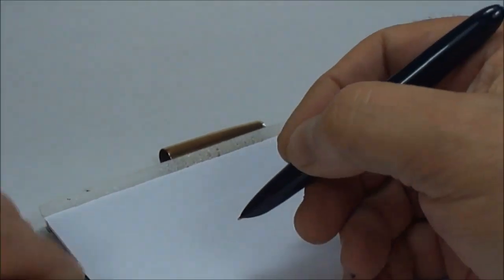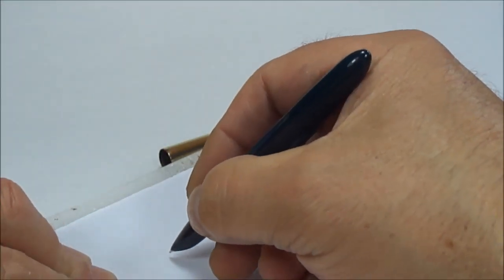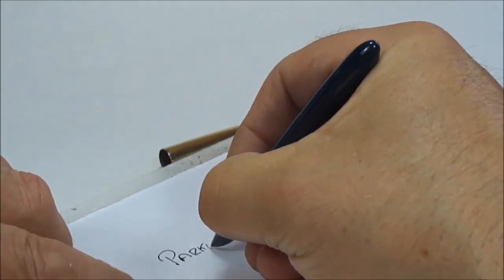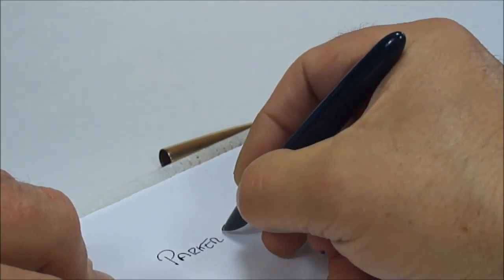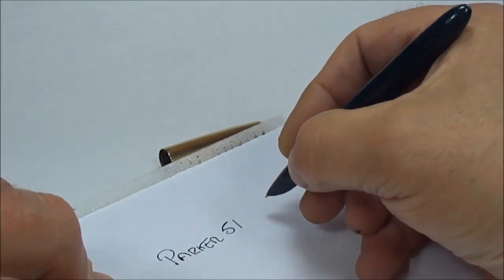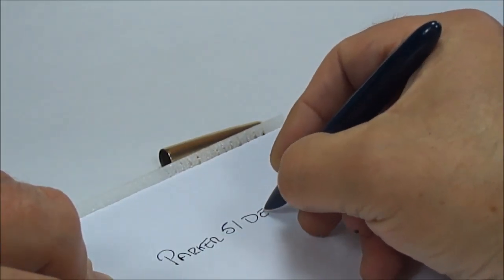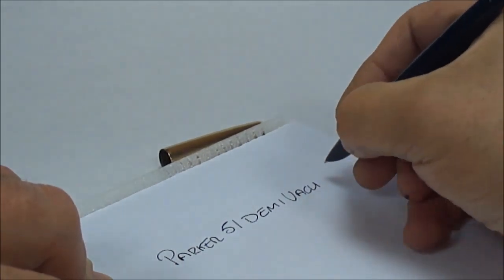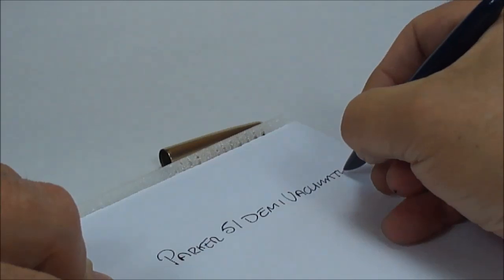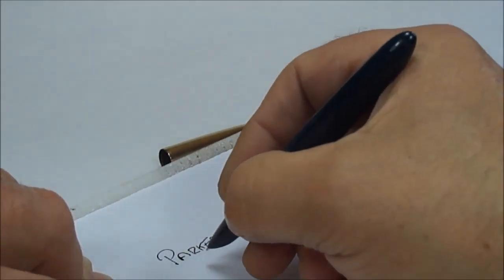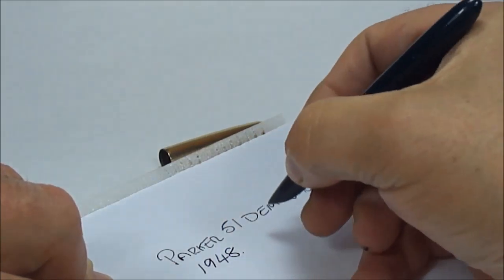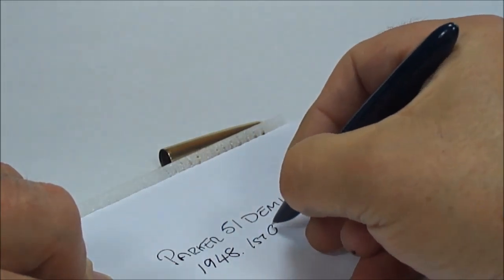So keep our fingers crossed at this point. And what we have, as I said, is a Parker—there we go—we've got a 51. As we said, this particular model is a superb example of the Demi vacuumatic. The date on this particular pen: 1948, and that's the first quarter.